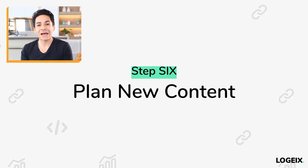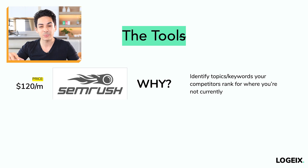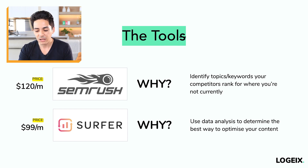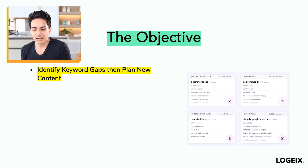Finally, step number six is to plan new content. I recommend two tools for this: a keyword research tool like SEMrush to look up your competitors, see which keywords they're focused on, and identify which ones you're missing — essentially a keyword gap analysis. Beyond that, use a tool like Surfer, which uses data to analyze competitors and your own website and tells you how to optimize for specific keywords. For example, I entered 'Shopify SEO' into Surfer and it told me you need pages about e-commerce SEO, SEO for Shopify, case studies SEO, and Shopify Google Analytics.